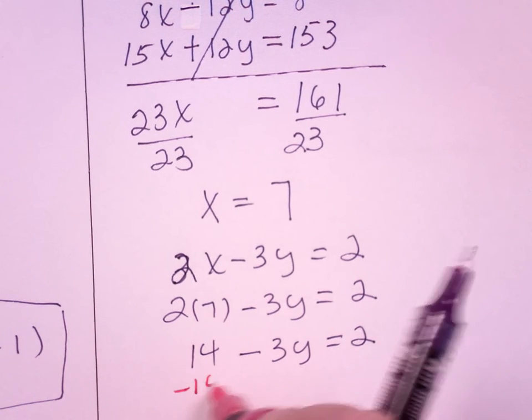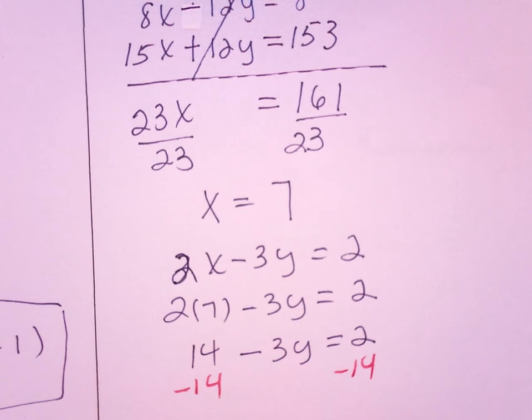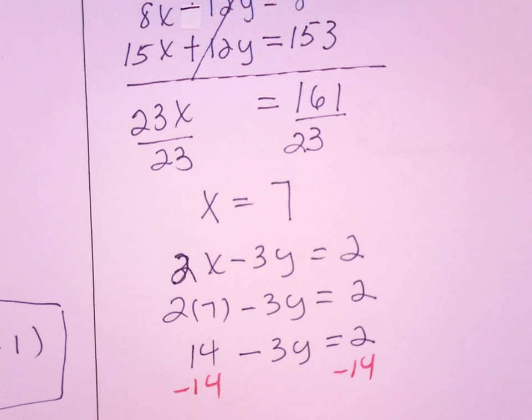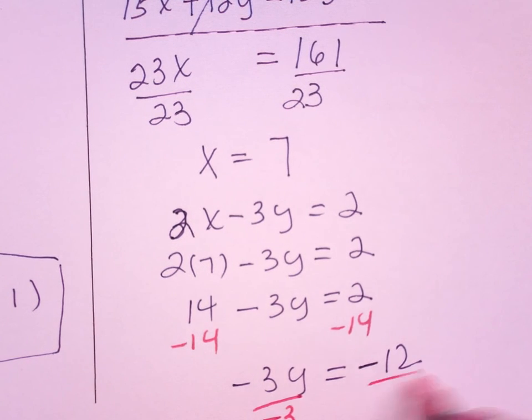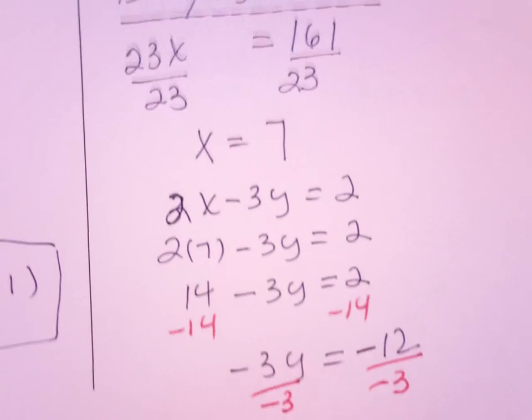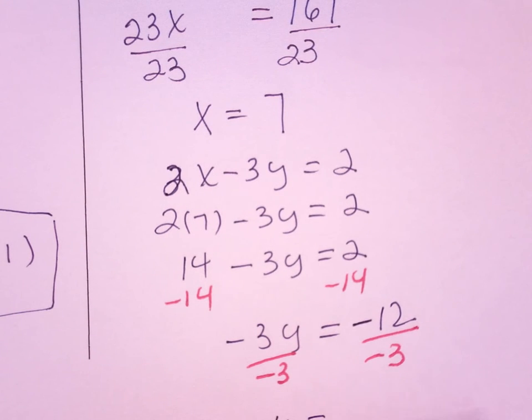14 minus 3y equals 2. Subtract 14 from both sides. Minus 3y equals, isn't that cute, minus 12. We like it when numbers come out nice. Divide by negative 3, so y equals 4.